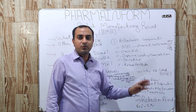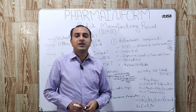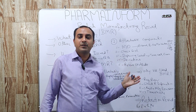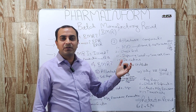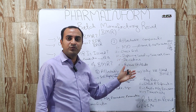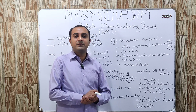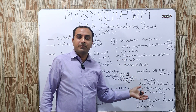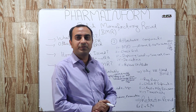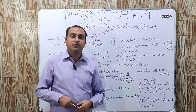The next attachable component is deviations. If there is any deviation during the manufacturing process, these deviations are also part of the BMR. Next are release certificates, which are provided by the quality control department. After granulation, if we have a release certificate, it will be provided by QC and will be part of the BMR. After the compression process and coating process, all the release certificates will also be attached to the BMR.